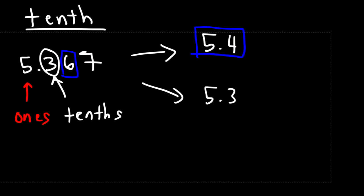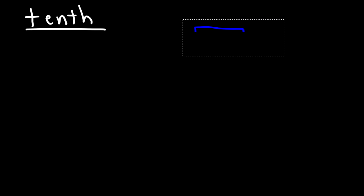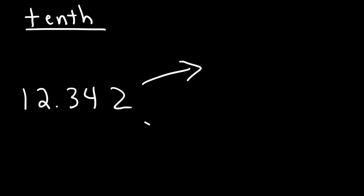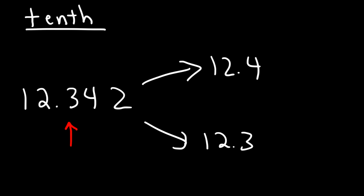Let's try another example. So let's say we have the number 12.342 — round it to the nearest tenth. Here is the tenths digit. So we're either going to keep it 12.3 or make it go up to 12.4. Looking at the next number, 4 — it's less than 5, which means we're going to round it down to 12.3.